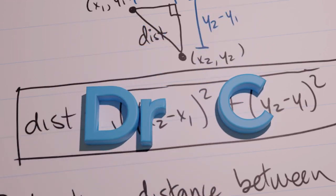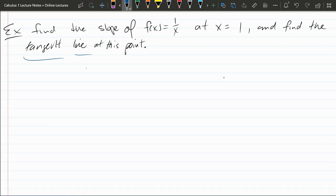We need to find the slope of a function at x equals 1 and the tangent line at this point. Remember the tangent line requires one point and we need to compute the slope using the difference quotient.